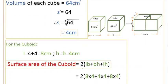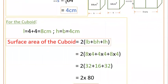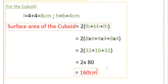Now surface area of the cuboid equals 2(lb + bh + lh). That equals 2(8×4 + 4×4 + 8×4), which equals 2(32 + 16 + 32), equals 2×80, equals 160 centimeter square. So this is the surface area of the cuboid.